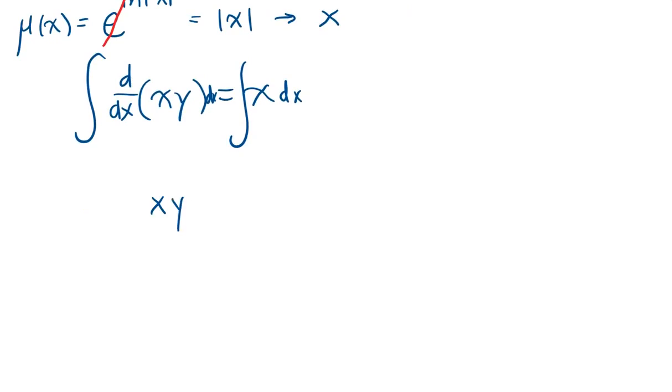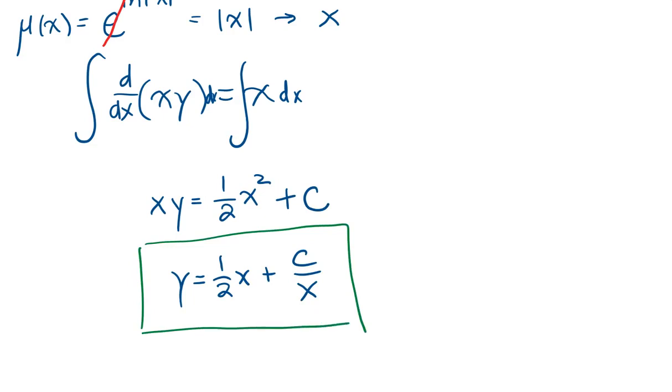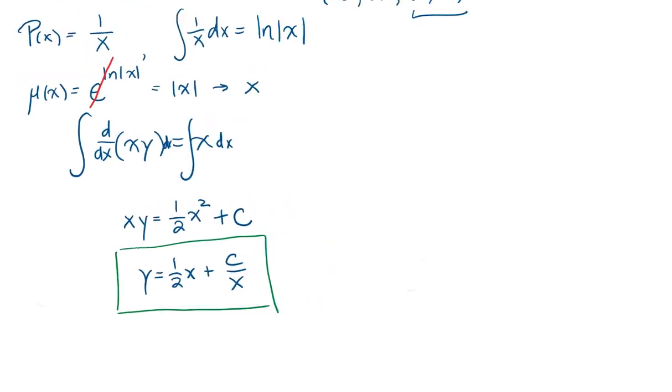xy is equal to 1 half times x squared plus c. We divide by x, and we get 1 half x plus c over x, and we have solved for the general family of solutions for our differential equation.